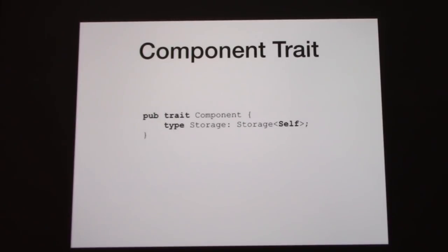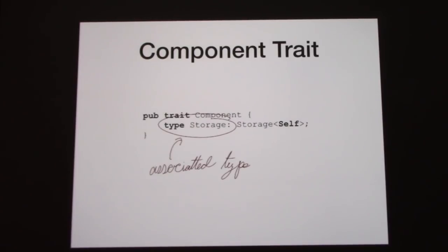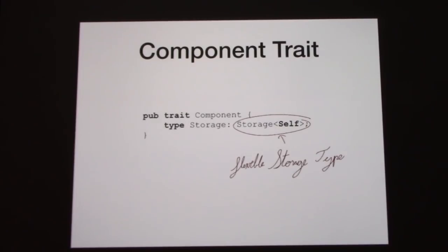Inside of specs, this is what a component trait looks like. It's pretty simple — we have this thing called an associated type. An associated type is a value that's bound to a trait. When you're using this trait, this value will get resolved here. This trait literally has no methods; all it has is this associated type, so that when we bind it to a specific type later, we know the type is associated with it.